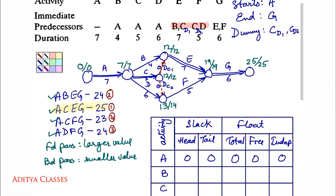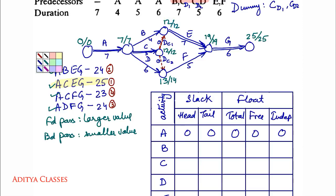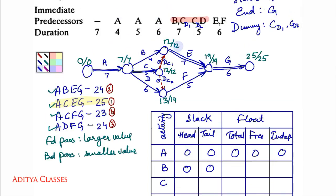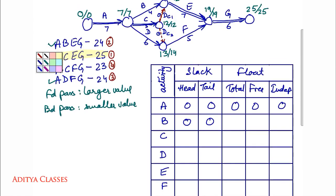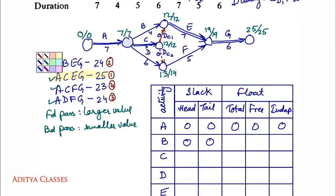For activity B: head slack is 12 minus 12 equals 0; tail slack is 7 minus 7 equals 0. Total float: 12 minus 7 minus 4 equals 1. Free float is total minus head slack. Independent float is free minus tail slack.